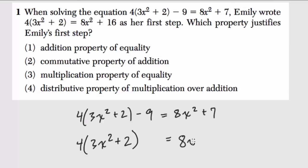On the right, though, we have 8x squared plus, not 7 this time, but 16. So there's two changes here. The minus 9 is no longer written, and instead of 7 we have 16. So what could have happened that did that?